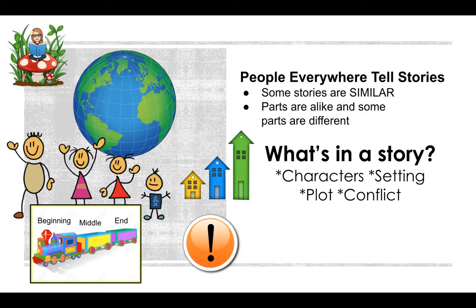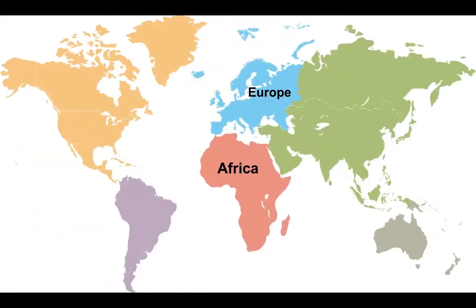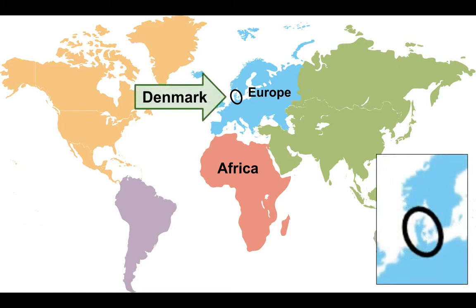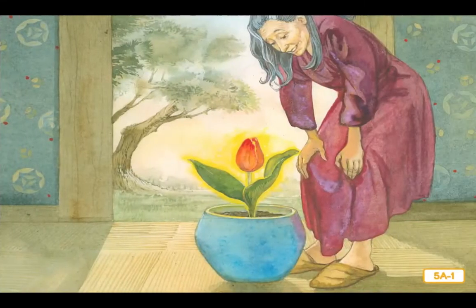Characters in different stories from around the world might have similar conflicts or problems. Our story today is a folktale. It was written down in Denmark long ago by a man named Hans Christian Andersen. Denmark is on the continent of Europe. Listen carefully to hear how the folktales of Thumbelina and Tom Thumb are similar and different.